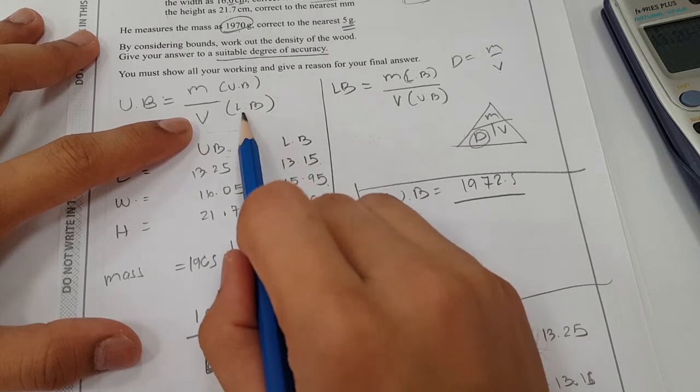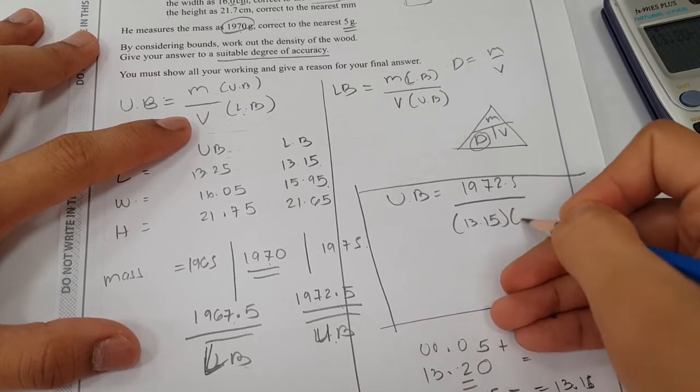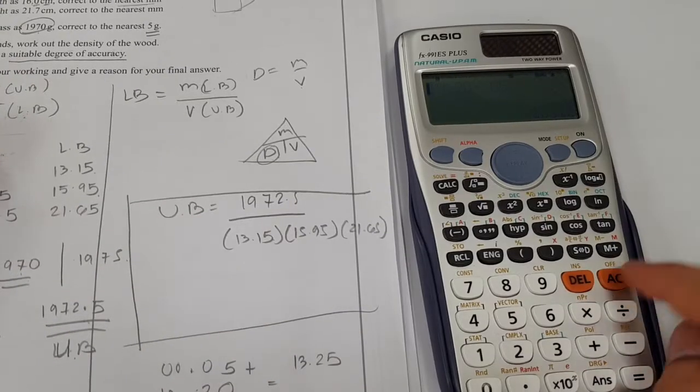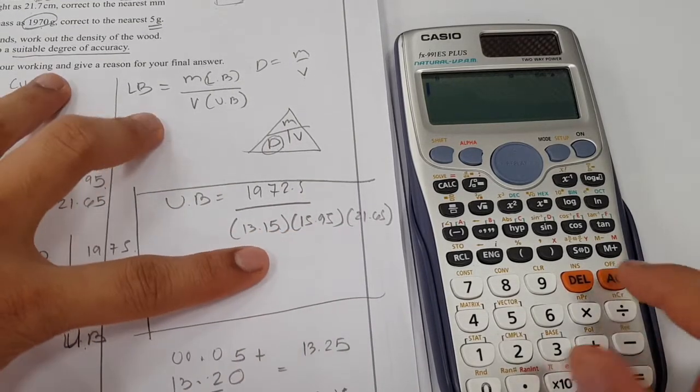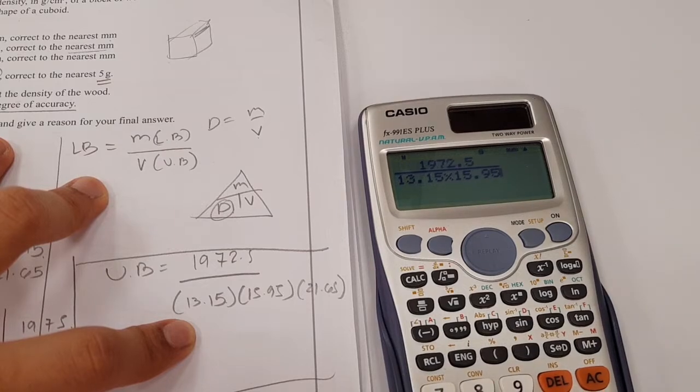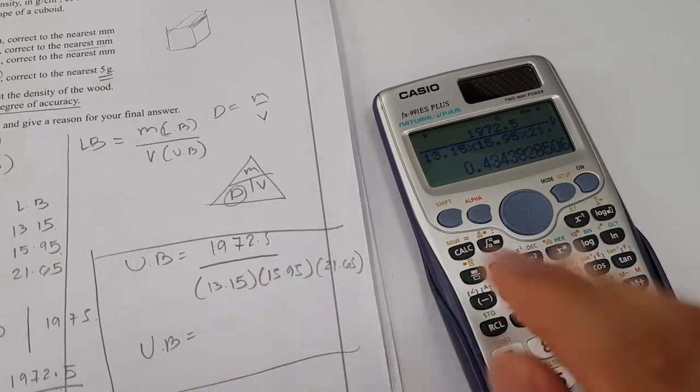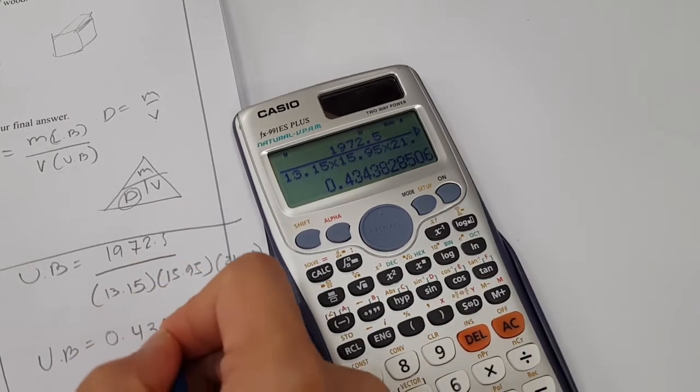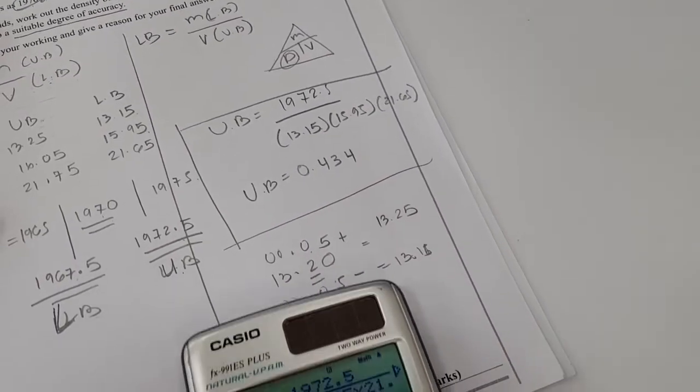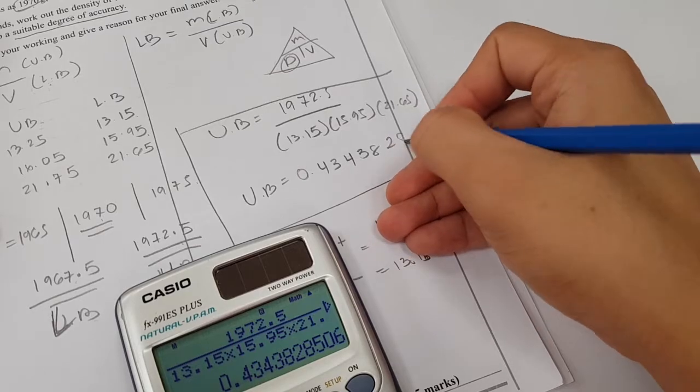The upper bound would be 1972.5 divided by the volume. For the volume, we need the lower bound. We're going to multiply all the lower bounds because volume is length times width times height. So 13.15 times 15.95 times 21.65. I got an answer. The upper bound density would be 0.4343828. Probably this would be enough.